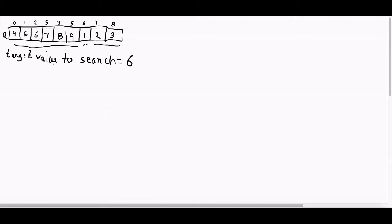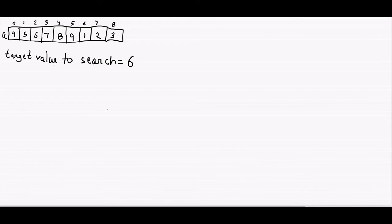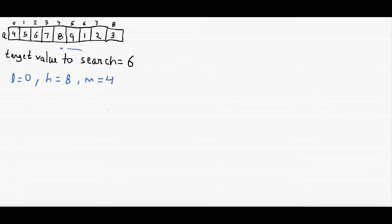We will use this property to search the target value in O(log n). Let's search 6 in this array. As in binary search, we define L equals 0 and high equals 8. Mid will be (0 + 8) / 2 = 4. Now at this point we have to decide whether we should go right or go left. If we find which half is sorted, we can check if the key is present in that half by doing a simple comparison with the extremes.